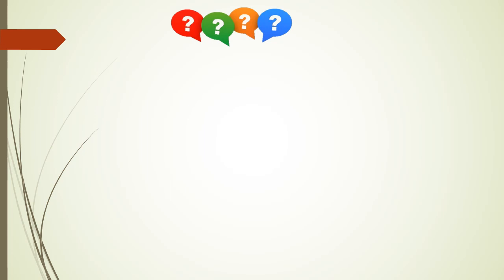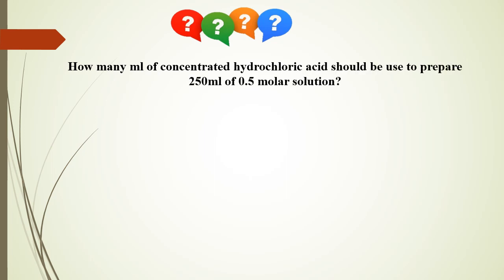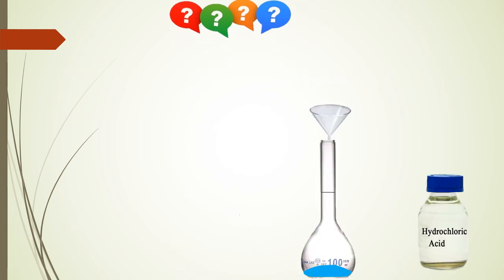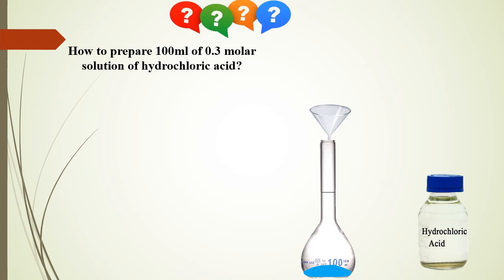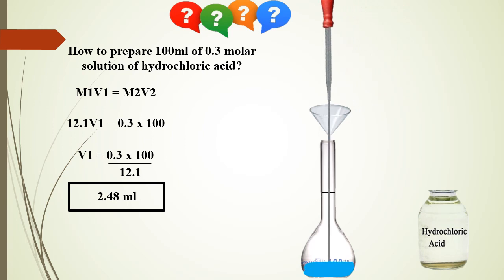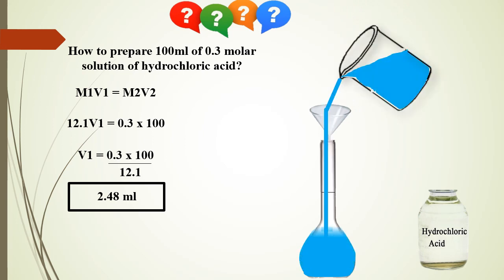Can you prepare this solution of hydrochloric acid now? How many ml of concentrated hydrochloric acid should be used to prepare 250 ml of 0.5 molar solution? The answer is 10.3 ml. How to prepare 100 ml of 0.3 molar solution of hydrochloric acid: take 2.48 ml of concentrated hydrochloric acid into a 100 ml measuring flask having a little water in it, and dilute the solution up to the mark.